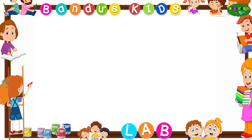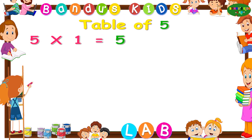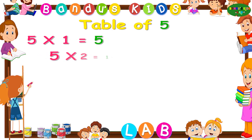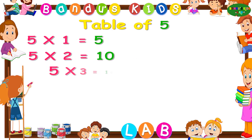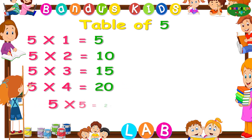Now let's revise the table of five one more time by singing. Five ones are five. Five twos are ten. Five threes are fifteen. Five fours are twenty. Five fives are twenty-five.